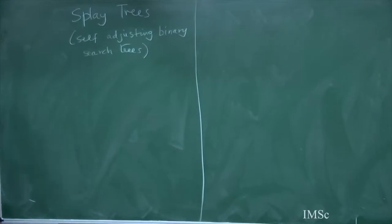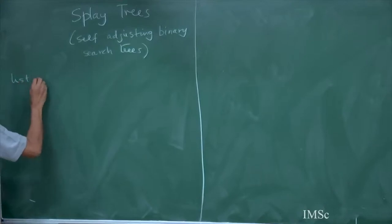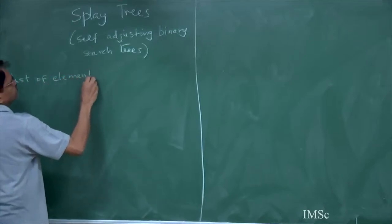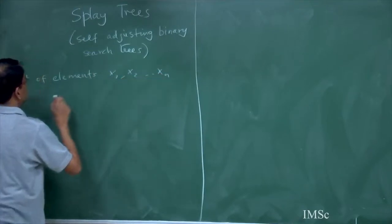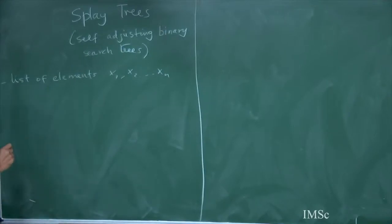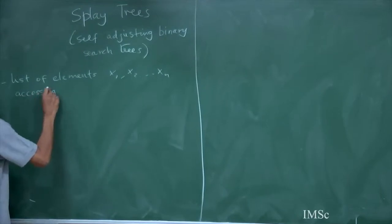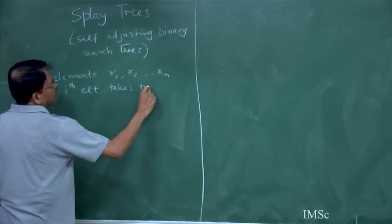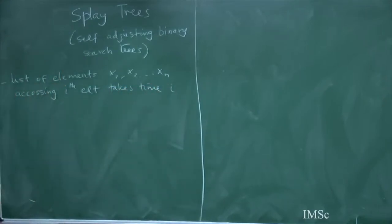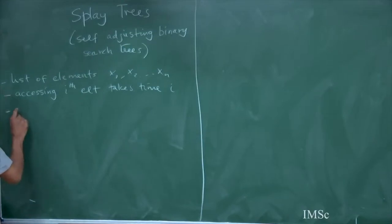Suppose you have a list of elements, and accessing the ith element takes time i. So it is a linked list — you can only start from the beginning and go to the ith element.